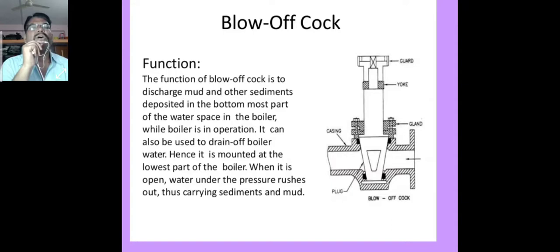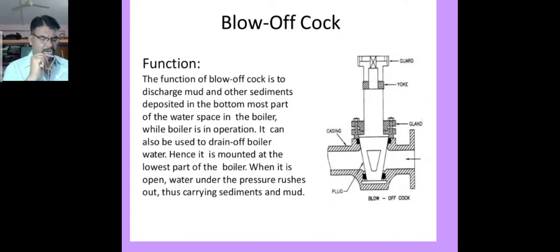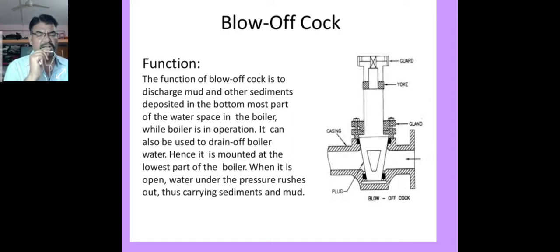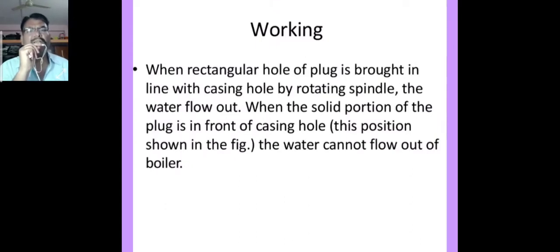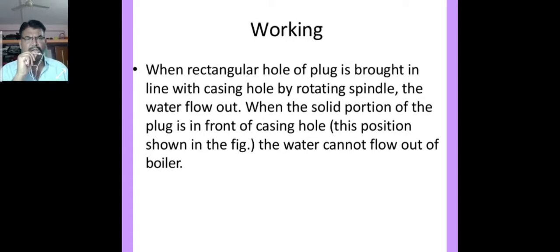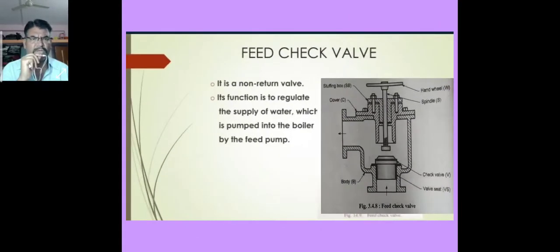The blow-off cock consists of a yoke, spark shank, gland, casing, and conical plug, with water in and water out from the middle portion. The main function of the blow-off cock is to empty the boiler whenever required for inspection and repair, and to discharge mud, scale, or sediments accumulated at the bottom of the boiler. When the rectangular hole of the plug is brought into line with the casing hole by rotating the spindle, water flows out; when the solid portion of the plug is in front of the casing hole, water cannot flow out.